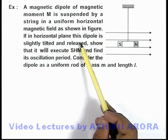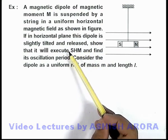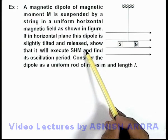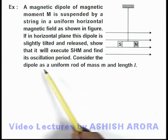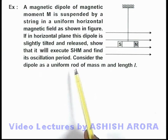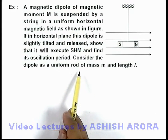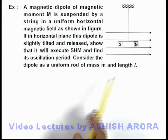If in the horizontal plane this dipole is slightly tilted and released, we are required to show that it will execute SHM and find its oscillation period. Consider the dipole as a uniform rod of mass m and length l.